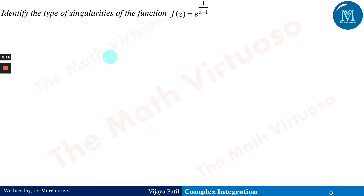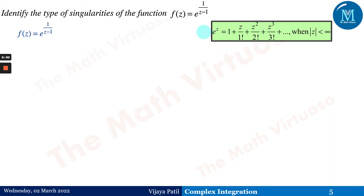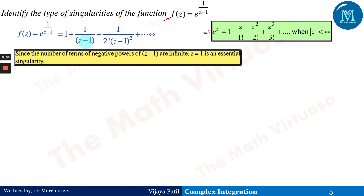Identify the type of singularity of f(z) = e^(1/(z−1)). Using the expansion e^z = 1 + z + z²/2! + ..., we substitute 1/(z−1) to expand f(z). Since the number of terms with negative powers of (z − 1) is infinite, z = 1 is an essential singularity, as per the definition.